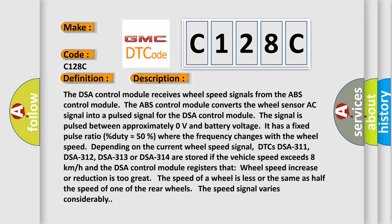Depending on the current wheel speed signal, DTCs DSA-311, DSA-312, DSA-313, or DSA-314 are stored if the vehicle speed exceeds 8 kilometers per hour and the DSA control module registers that wheel speed increase or reduction is too great, the speed of a wheel is less or the same as half the speed of one of the rear wheels, or the speed signal varies considerably.